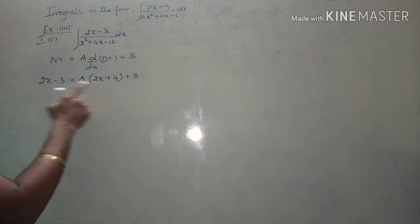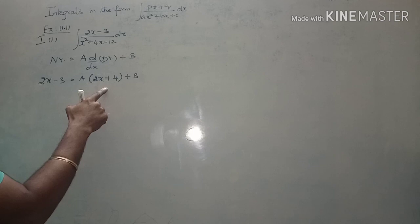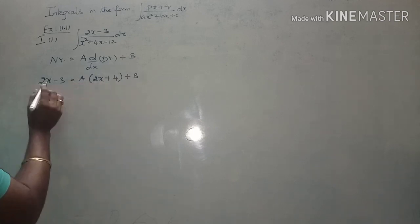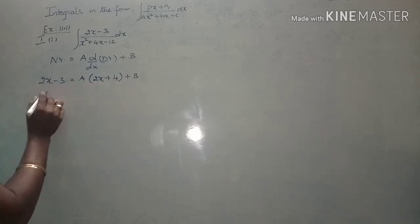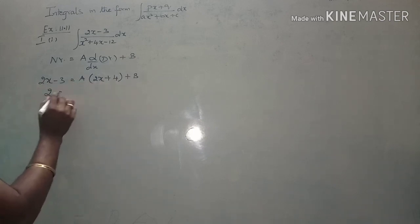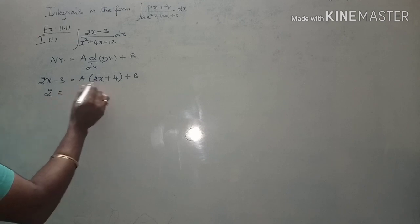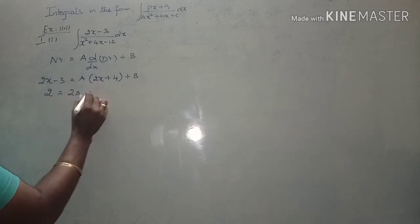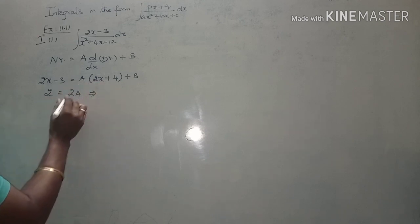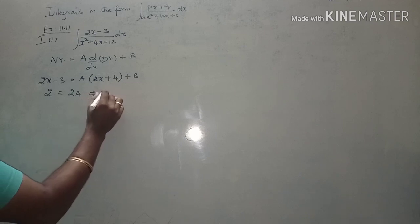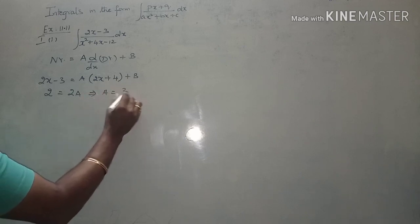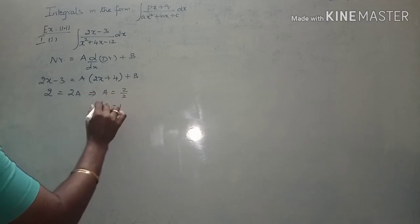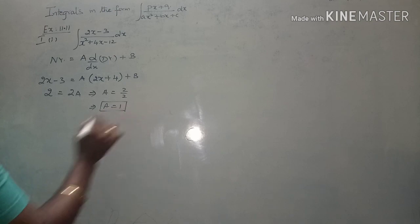Now equate the x-coefficients on both sides and the constants on both sides. The x-coefficient on the left hand side is 2. On the right hand side it is 2A. So 2 = 2A, which implies dividing by 2 gives A = 1.